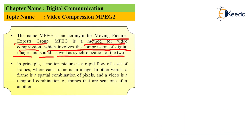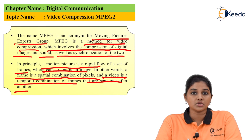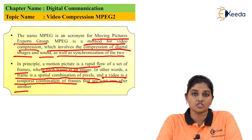In principle, a motion picture is basically a rapid flow of a set of frames, and each frame is nothing but an image. In other words, a frame is a spatial combination of pixels, and a video is a temporal combination of frames that are sent one after another. This is the basic principle behind the technique that is MPEG-2.